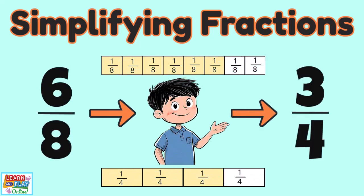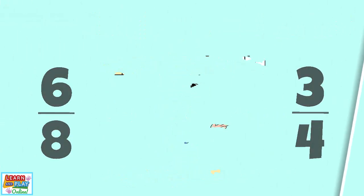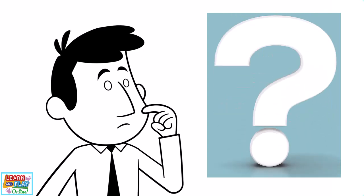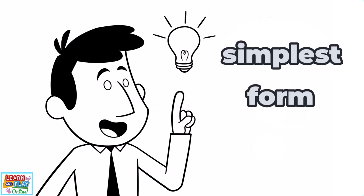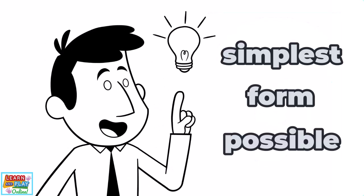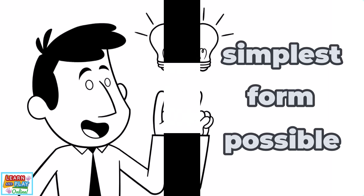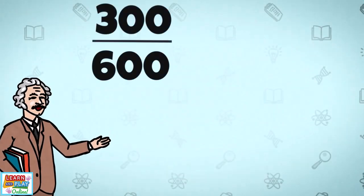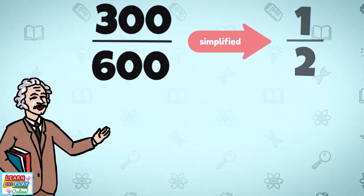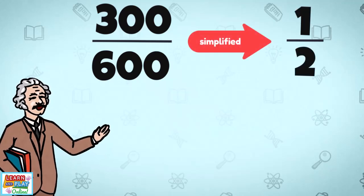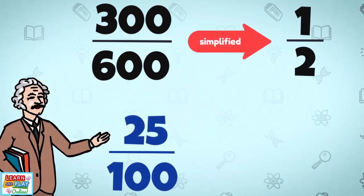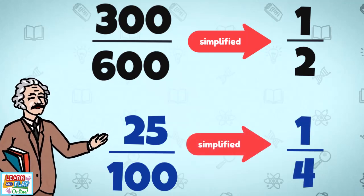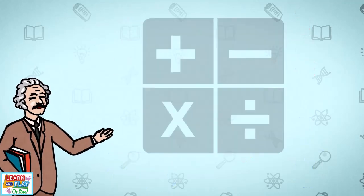Simplifying fractions. When we simplify fractions, that just means we are representing a fraction in the simplest form possible. We don't want to deal with larger numbers unnecessarily. For example, why say 300 over 600 when we can just say half? Or 25 over 100 when it can be simplified and represented as a quarter?